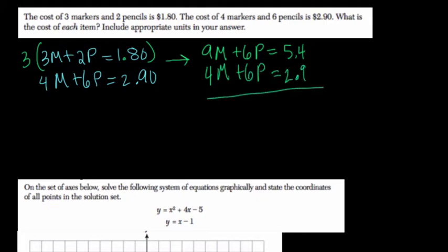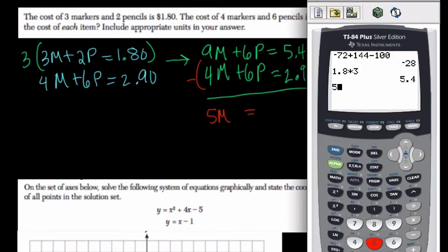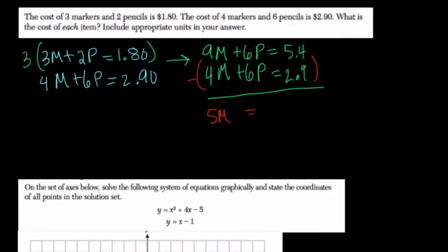So now, what we've done is we can cancel out. Let's subtract the second equation from the first. 9 minus 4 is 5m. 6 minus 6 is 0. And 5.40, right, 5.4, oops, 5.4 minus 2.9 equals 2.5.